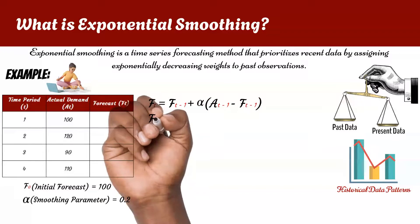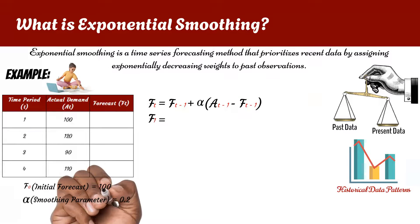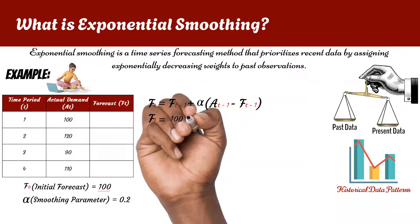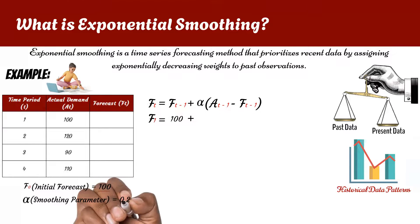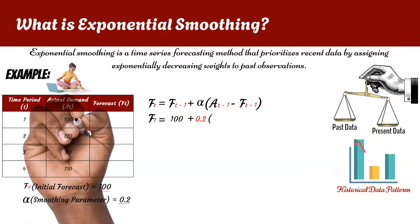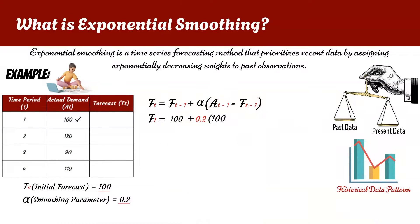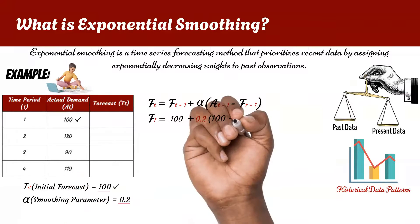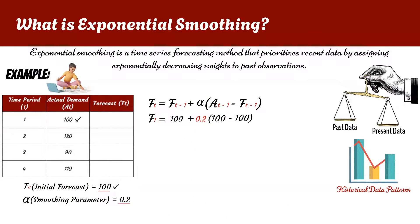To forecast for period 1, we begin by using the assumed forecast of the previous period, which is 100, plus 0.2, which is the smoothing, and multiply this by the difference of the actual demand of period 1, which is 100, and the assumed forecast, which is also 100. This should give us a value of 100.